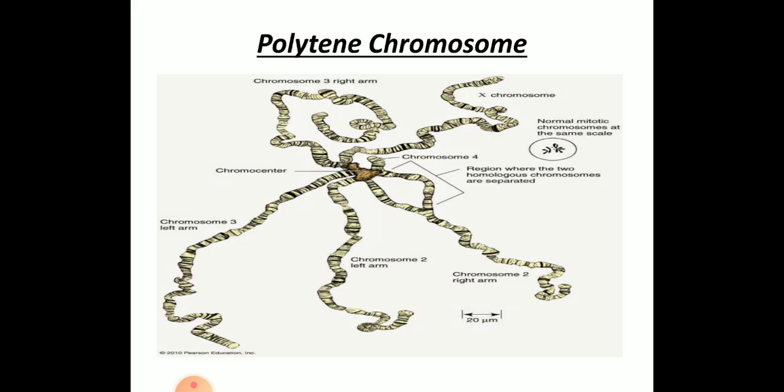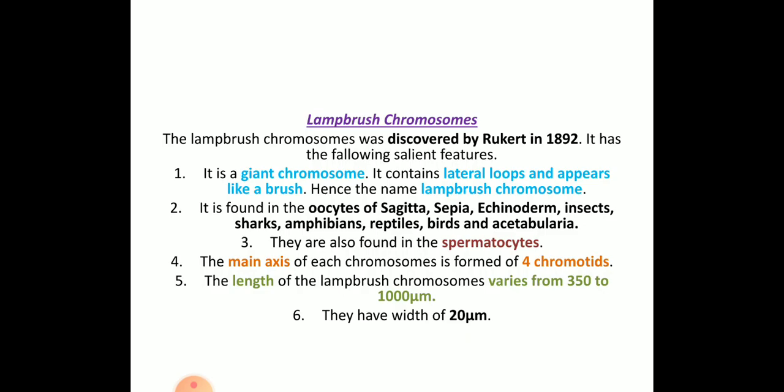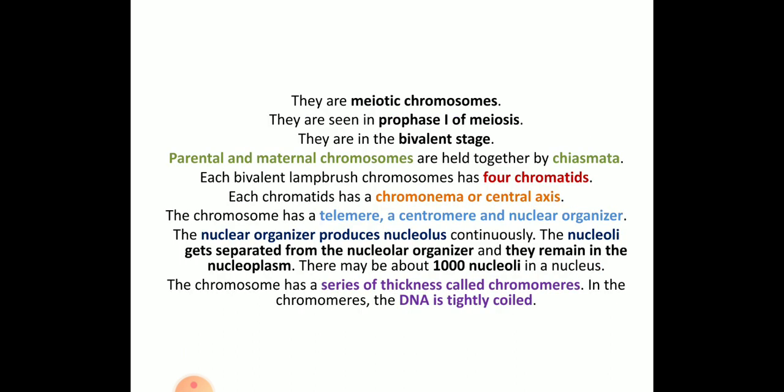Lampbrush chromosomes were discovered by Rückert in 1892. They are giant chromosomes containing lateral loops and appear like a brush, hence called lampbrush chromosomes. They are found in the oocytes of Sepia, Sagita, echinodermates, insects, amphibians, and reptiles, and also in secondary spermatocytes. The main axis is formed by four chromatids, and their length varies from 350 to 1000 micrometers, with a width of 20 micrometers.